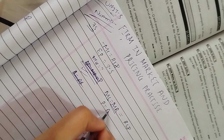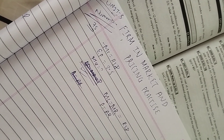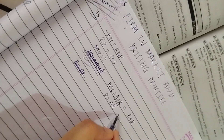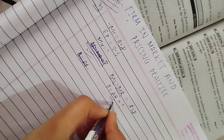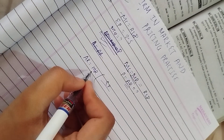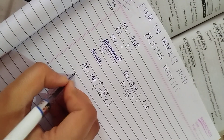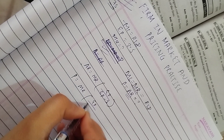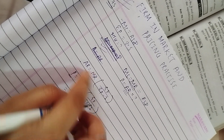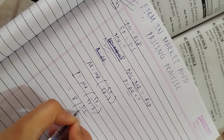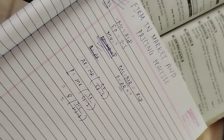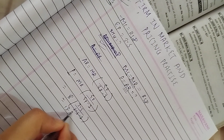We use the formula: AR (price) equals MC multiplied by ep divided by (ep minus 1). Substituting: AR equals 8 multiplied by 2.5 divided by (2.5 minus 1), which gives us 8 multiplied by 2.5 divided by 1.5. So we get 13.33.